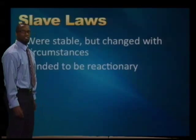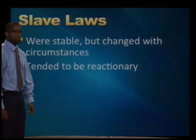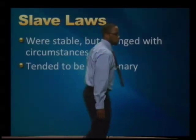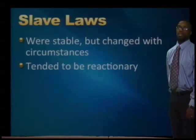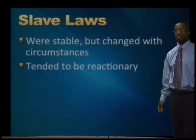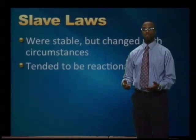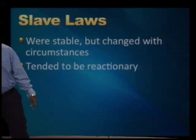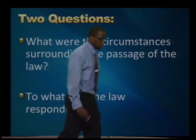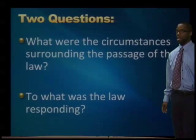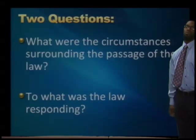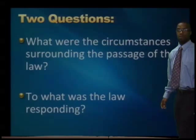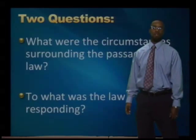Now, with those things in mind, let's think about slave laws of the early North American colonial period. These slave laws were stable, but they tended to change with the circumstances. Slave laws also tended to be reactionary — they would respond to something that happened. With that in mind, we're going to look at two slave laws of the early North American colonial period, and as we look at those laws, we'll ask these two questions: Number one, what were the circumstances surrounding the passage of this law? And number two, to what was the law responding?